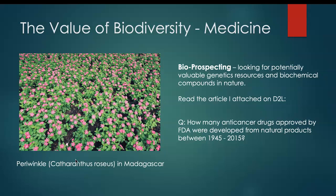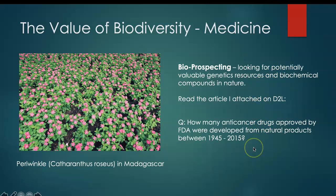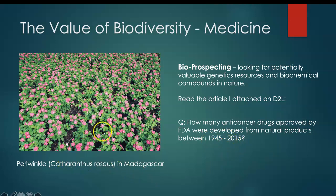As an example of the value of biodiversity, I want to use medicine. Please read the article I attached to D2L. What is bioprospecting? It is looking for potentially valuable genetic resources and chemical compounds in nature. My question for you: how many anti-cancer drugs approved by the FDA were developed from natural products over roughly 50 to 60 years? Periwinkle is a famous anti-cancer drug, flourishing in Madagascar.